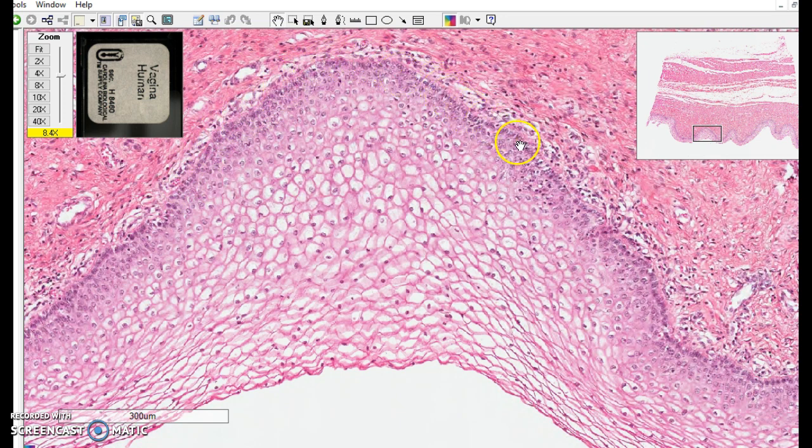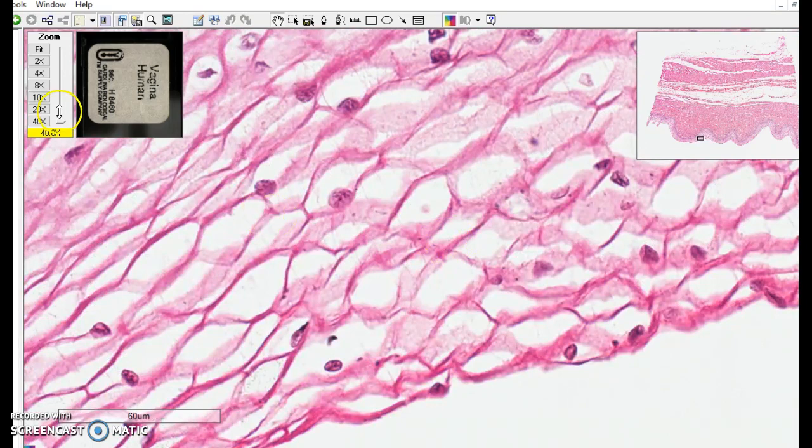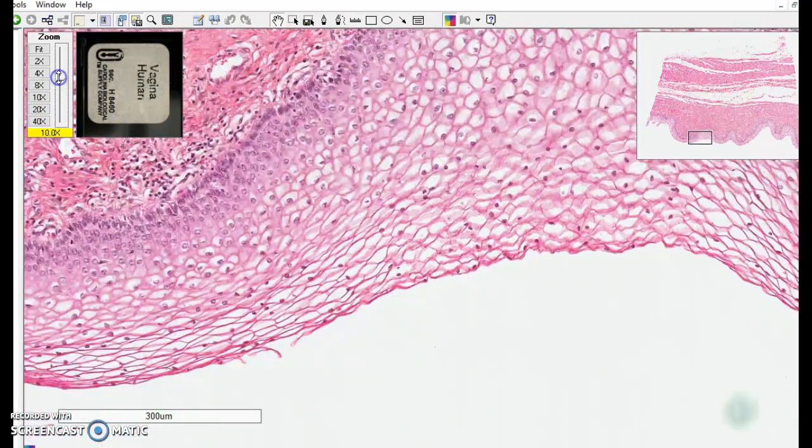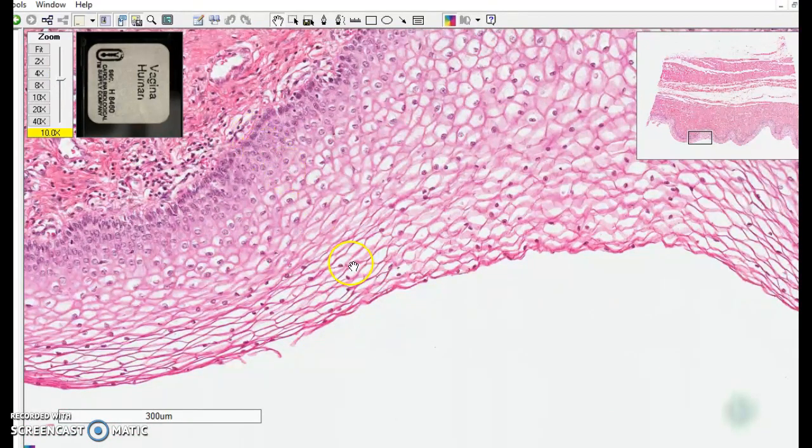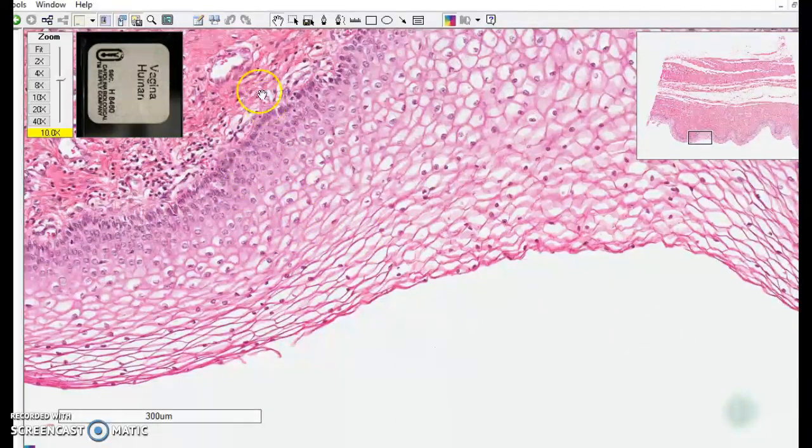Those are the ones that are dividing and producing these cells that move farther and farther away from their blood supply. As they move farther away they become flatter and flatter, and so this tissue is named after these surface cells that are in fact squamous in shape. These are the older cells at the surface, the younger cells are here. They'll divide and push the cells toward the surface, and as they move away from a blood supply they die off.